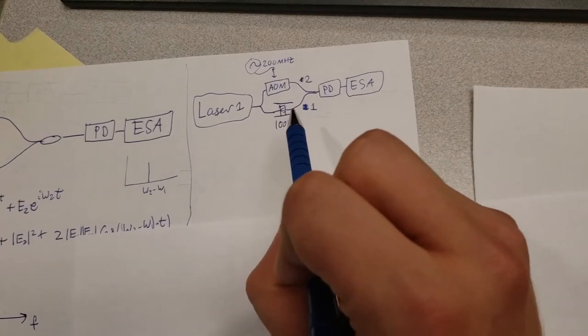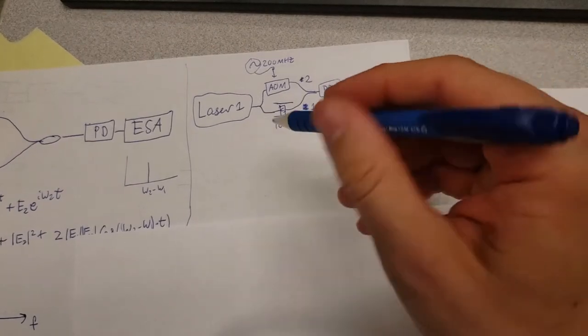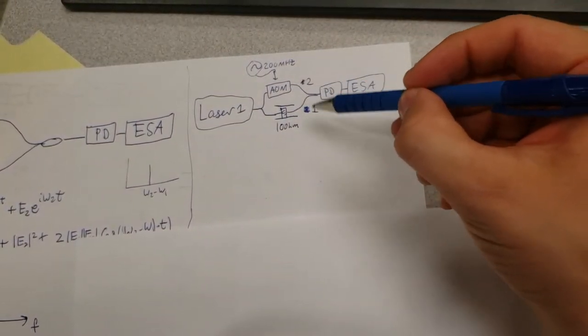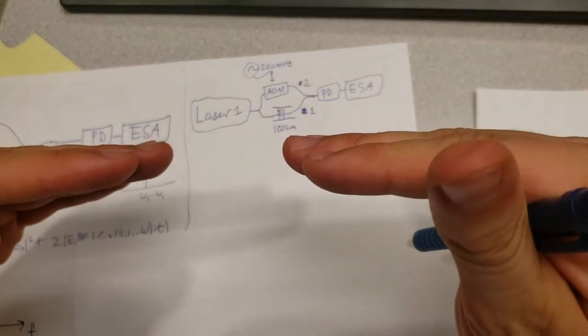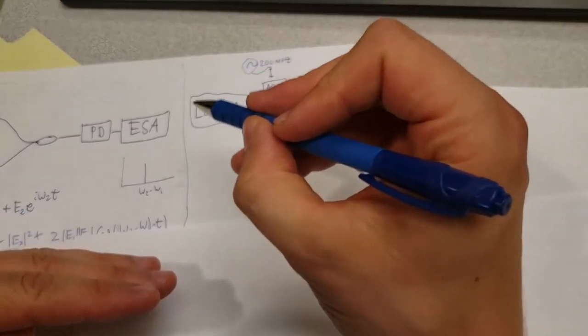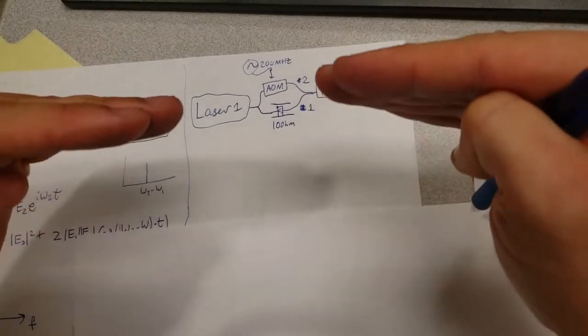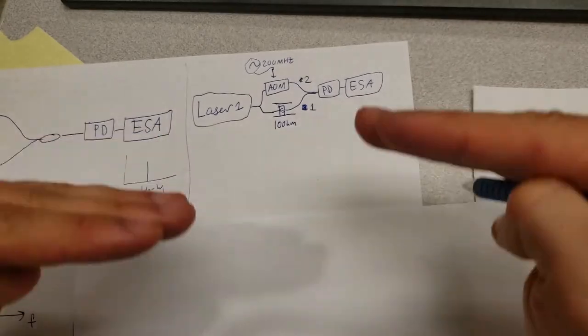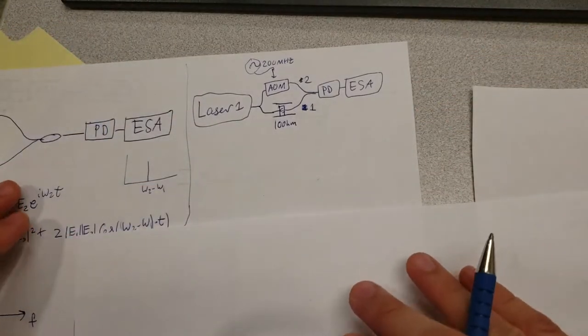The reason why we need a 100 kilometer delay line is that we want to ensure that the wave from the second branch and the wave from the first branch are decoherent. If we want to measure the line width, we have to see what happens when the phase of the frequency randomly shifts around. But if we don't have a 100 kilometer delay line, these two are going to shift in sync and we can't detect the line width. But if we have a very large delay line, they're going to shift randomly against each other and we'll get an appropriate measurement.